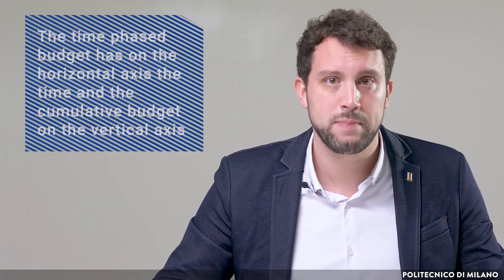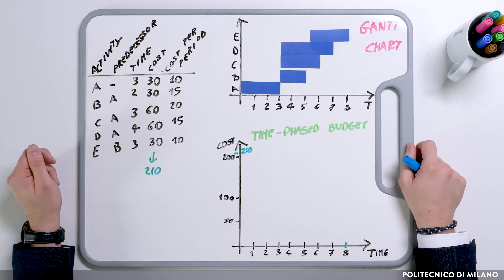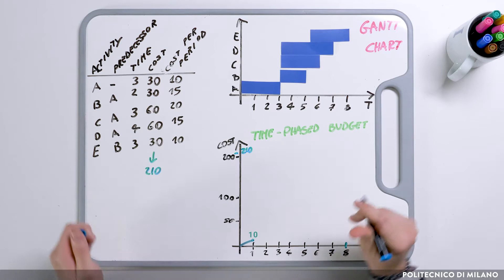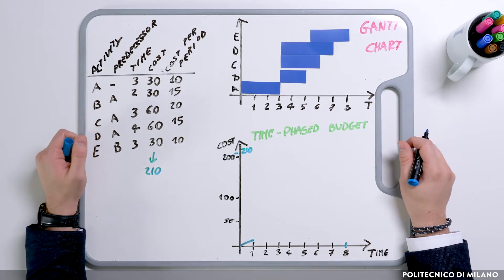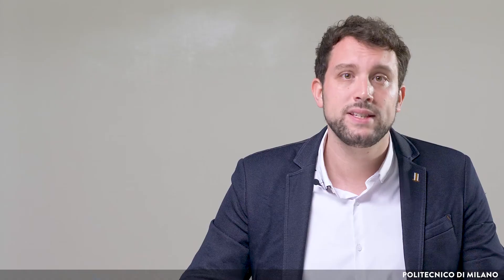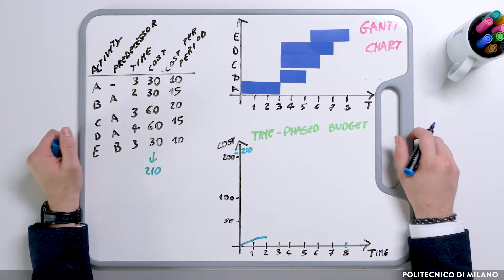Let's start building the time-phase budget from the Gantt chart. It has time on the horizontal axis and cumulative budget on the vertical axis. In period 1, we'll be working only on activity A, which has a cost per period of 10 — so the first point of the time-phase budget will be 10. In period 2, the same situation applies, giving a second point at 20. Note that the time-phase budget is a cumulative curve, summing costs period after period. The third period has the same impact, reaching 30.